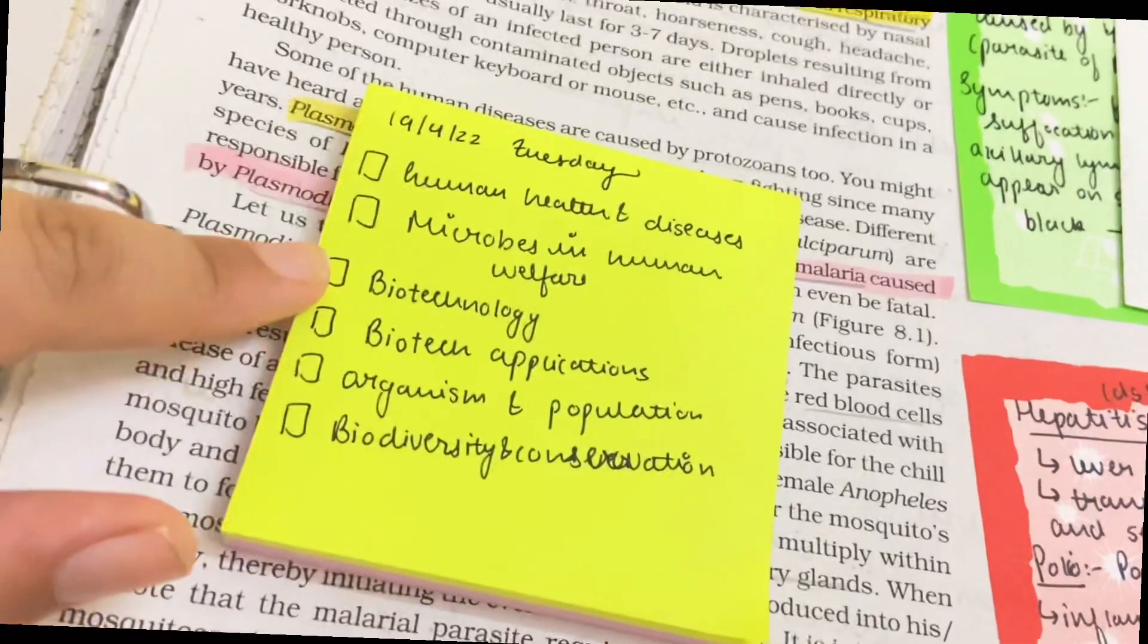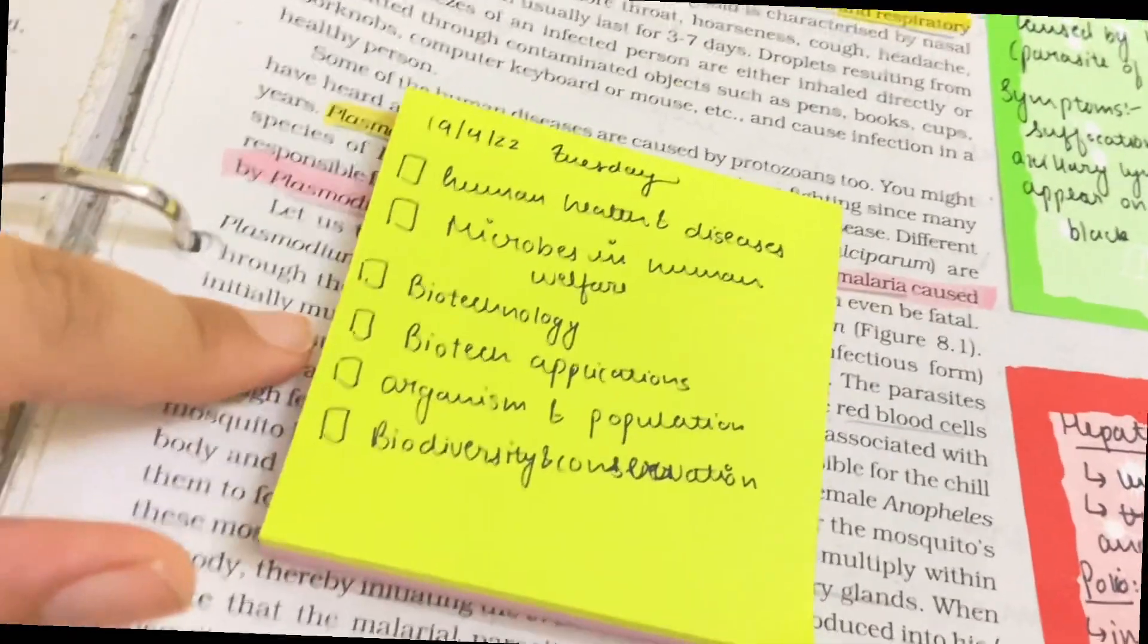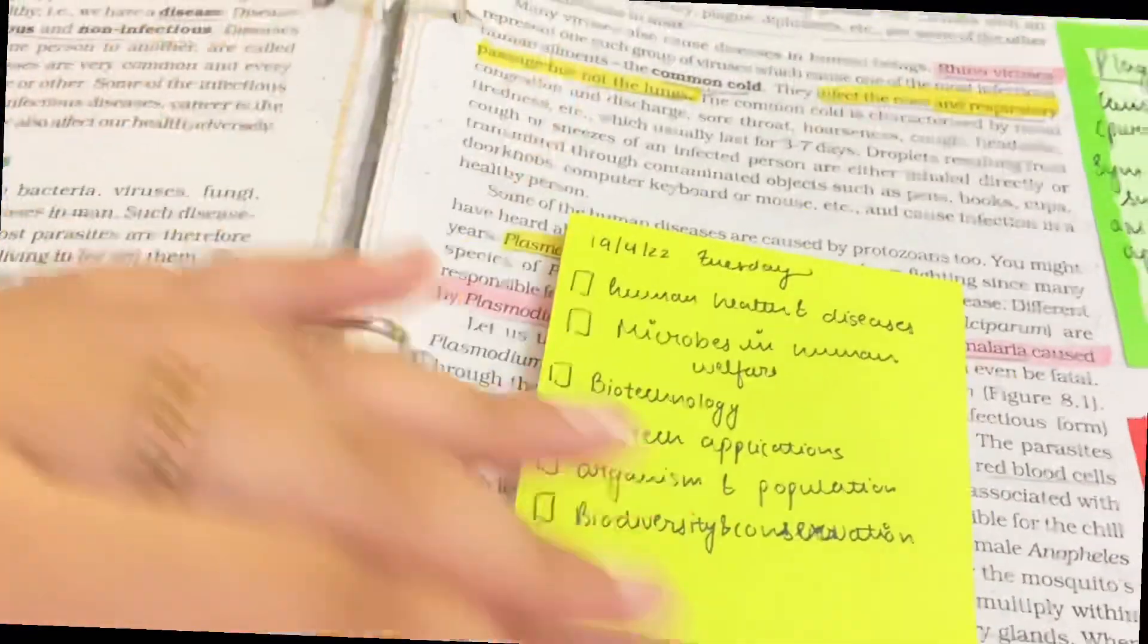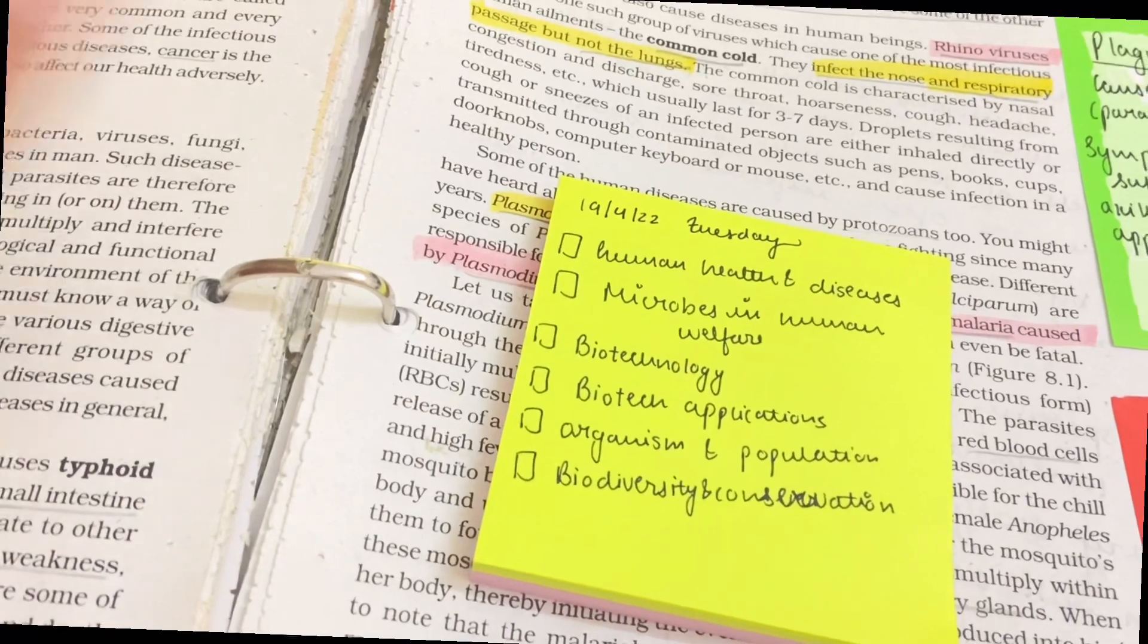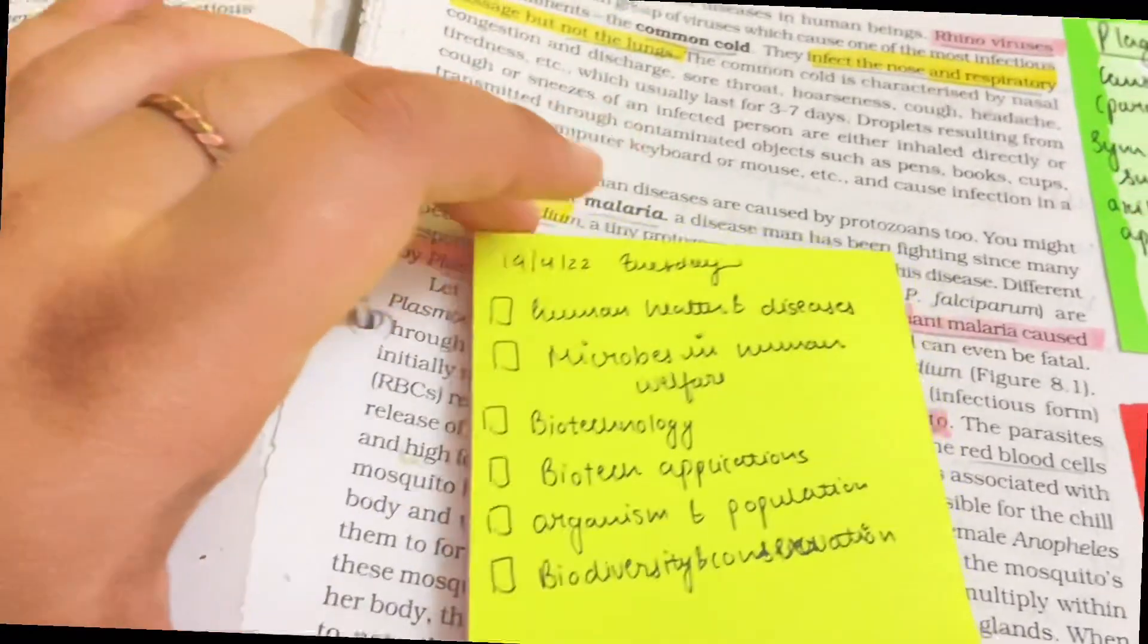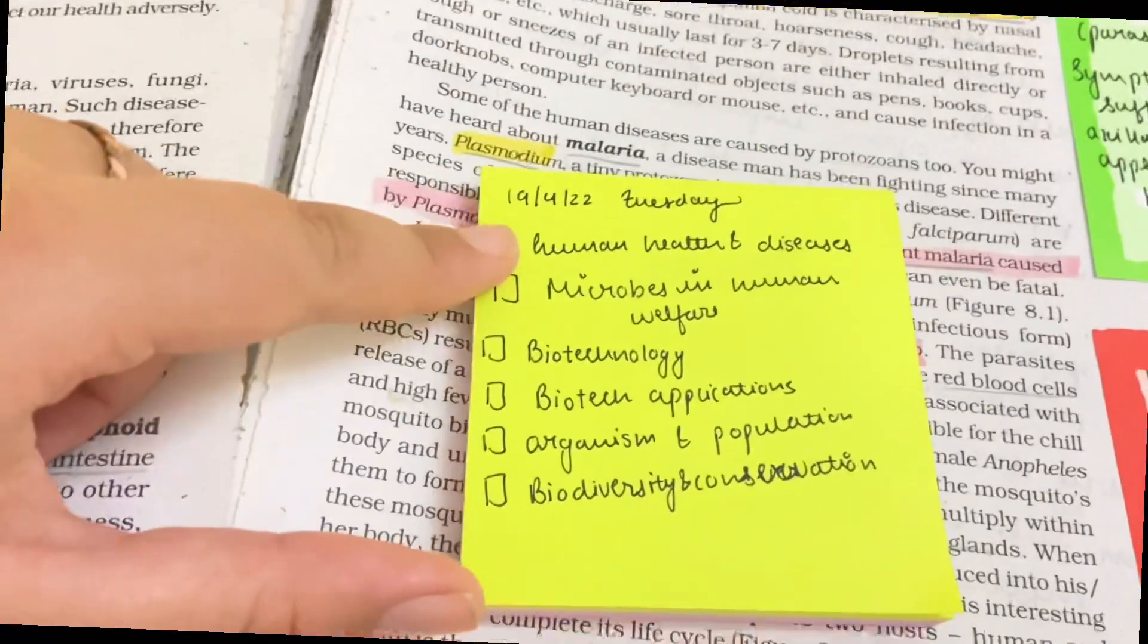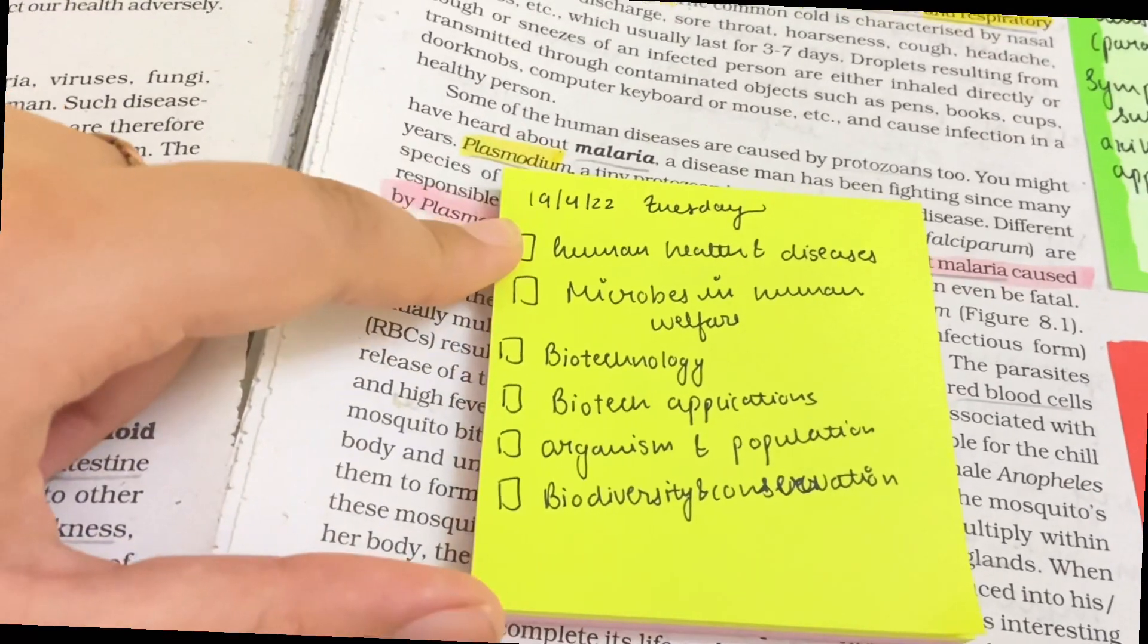Basically what I'm going to do is revise the chapters and then side by side I'm also going to do their board PYQs. So first of all we have the chapter known as Human Health and Disease, so I'm going to start with this one.